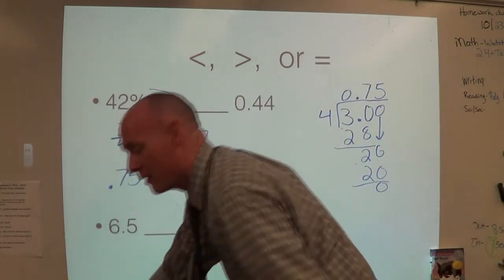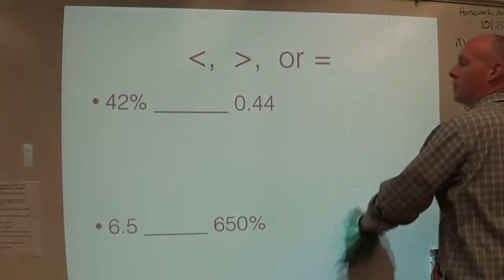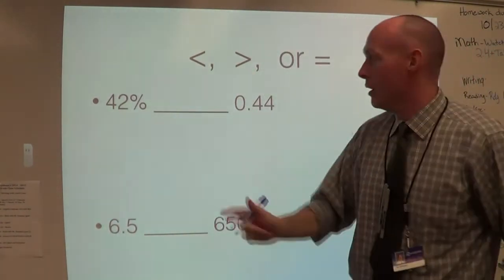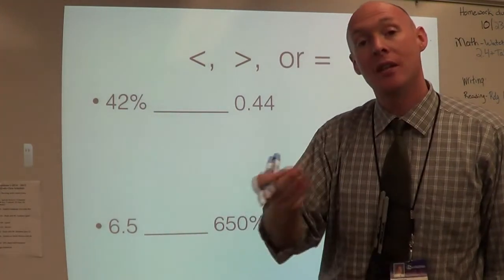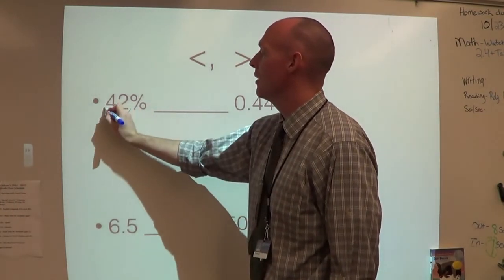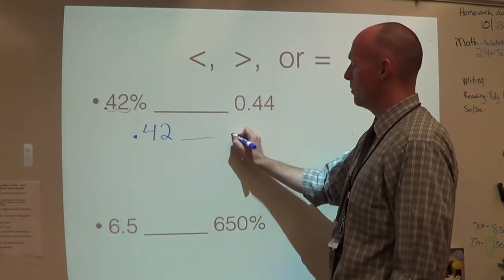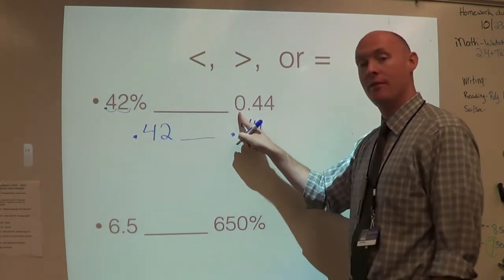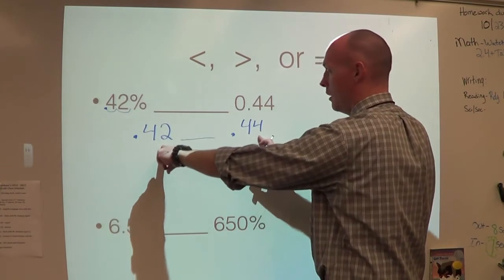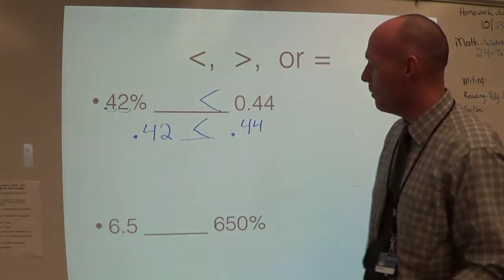Let me show you another example. This time we're going to use percent. Here I have forty-two percent compared to 0.44 or forty-four hundredths. The best way to do it is to change the percent to a decimal — move the decimal two places to the left. So we are at 0.42 compared to 0.44. Now let's compare: four and four are equal; two and four — I'd rather have the four. So the alligator is going to eat that way.